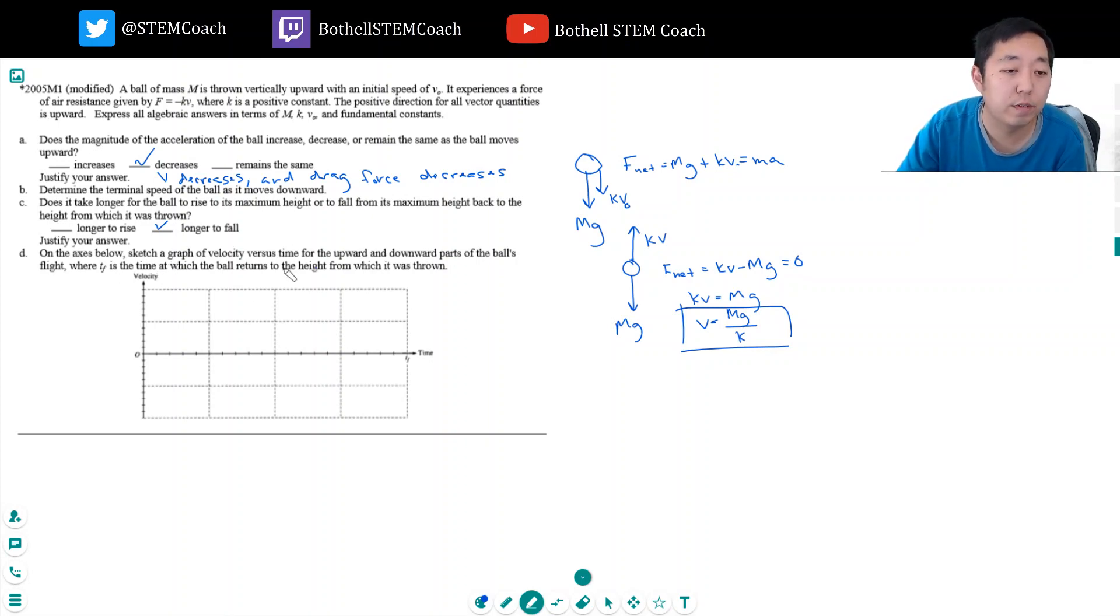On the axis below, sketch the graph of velocity versus time for the upward and downward parts of the ball's flight, where tf is the time at which the ball returns the height from which it was thrown. So tf is back down to here. This is a very strange one because it's not a constant velocity decreasing. So if it were constant, basically its velocity would start here and then go. So without any air resistance, it would look like this, right? That's sort of without air resistance. It's a constant velocity.